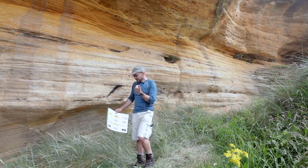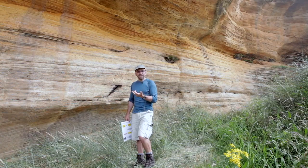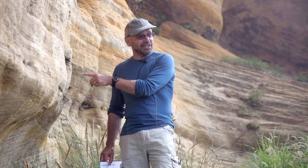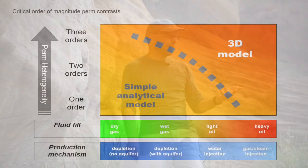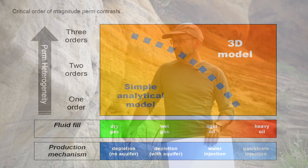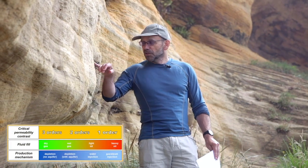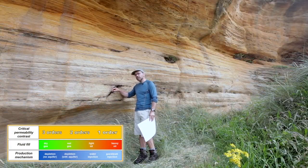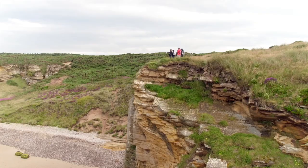First up, the thing that we call Flora's rule: think about whether the fluid we're dealing with is sensitive to that kind of heterogeneity. The simple rule of thumb, as Flora would say, is that if it's a gas field, you need three orders of magnitude permeability contrast to see the heterogeneity. For an oil field, two. And only if it's a heavy oil or a field with steam or water injection do you become sensitive to these one-order contrasts.